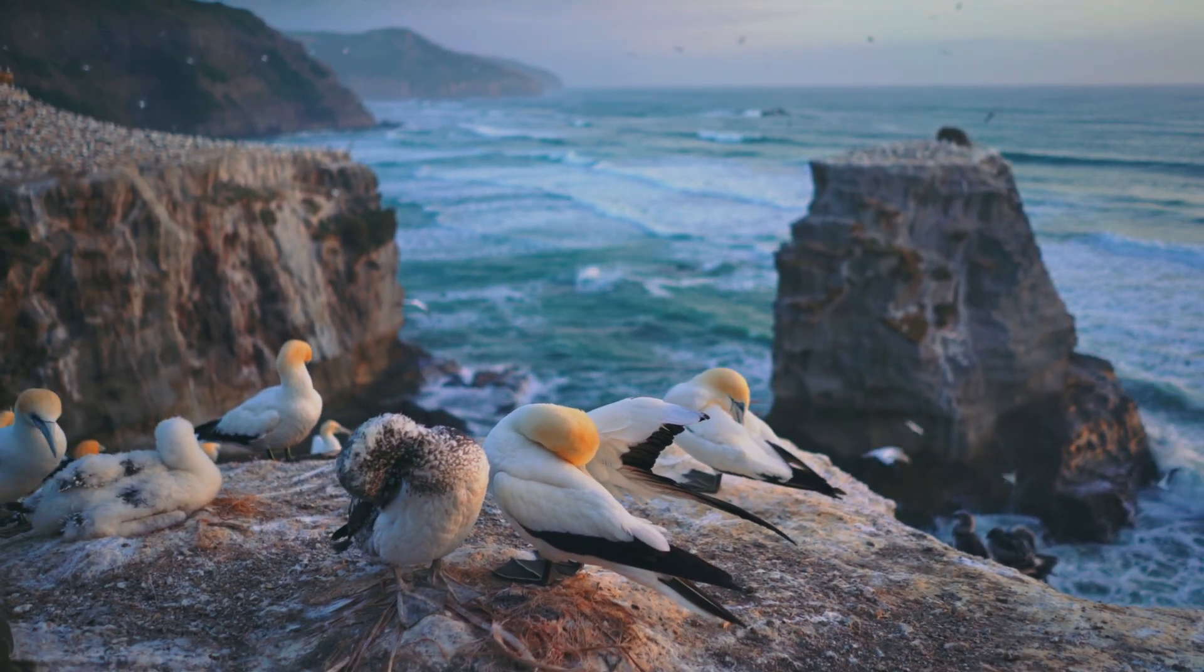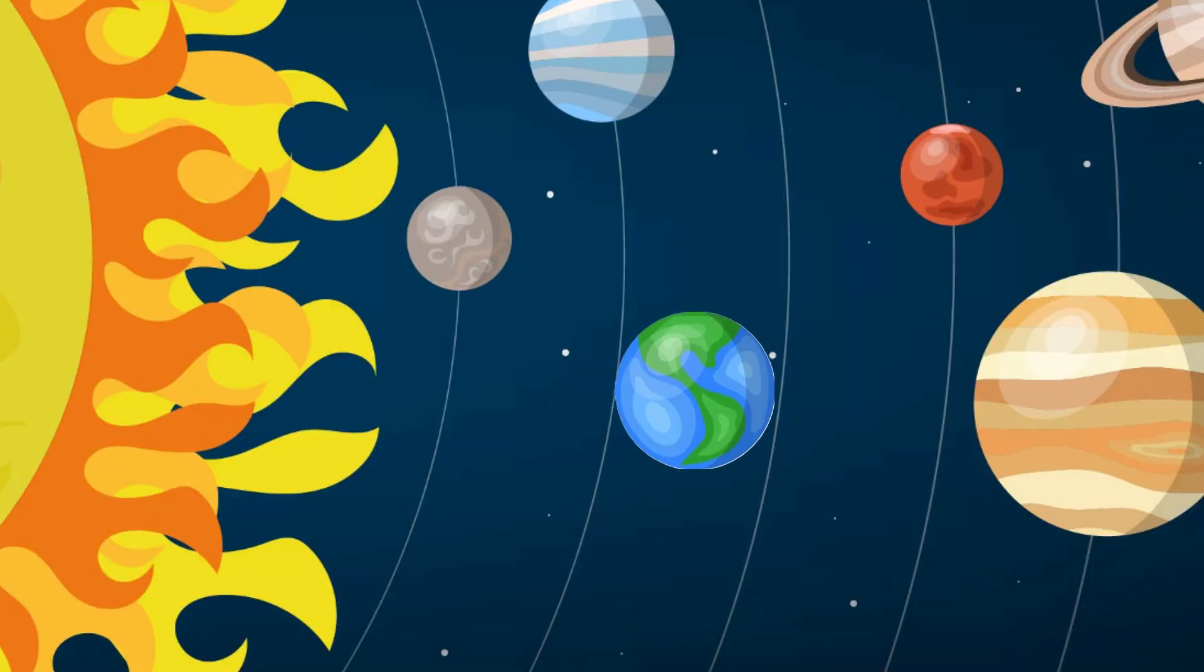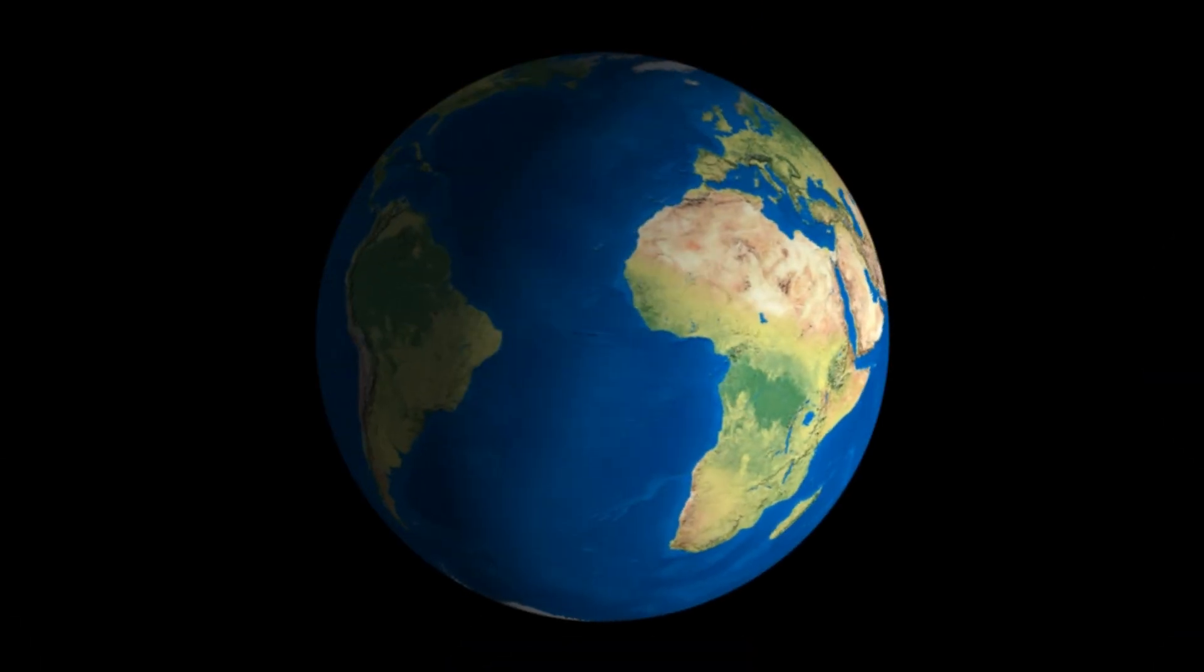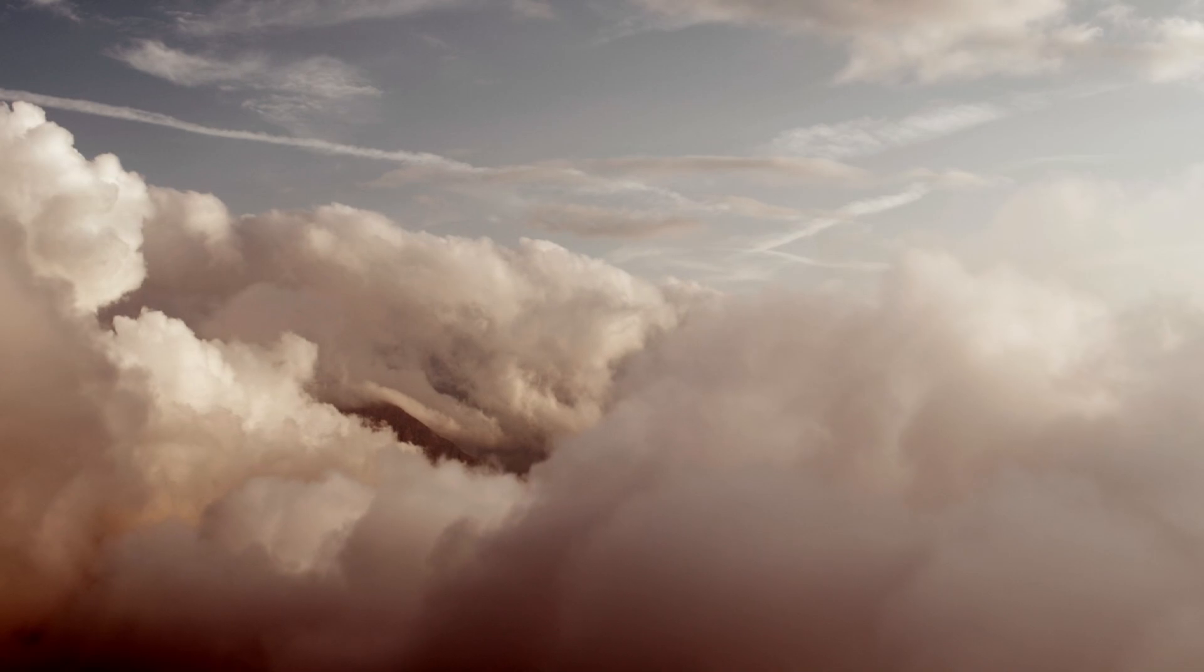Here's the thing, life on Earth depends on a razor-thin margin. Move us just 5% closer or farther, and over time we could enter runaway heating or cooling cycles. Even slight orbital shifts mess with climate systems, ocean currents and atmospheric chemistry.